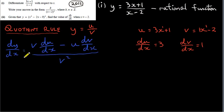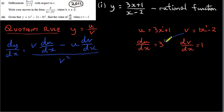dy/dx — that's what we're looking for — is v multiplied by du/dx, minus u times dv/dx, all divided by v squared. So we take v, multiply by du/dx, then subtract u times dv/dx, and divide the whole lot by v squared.